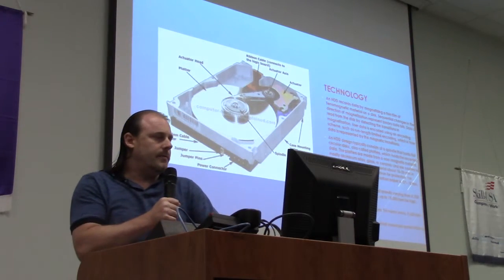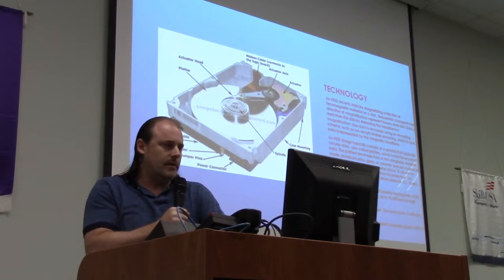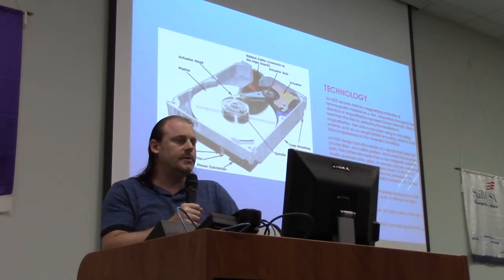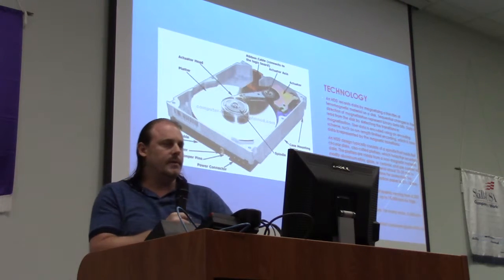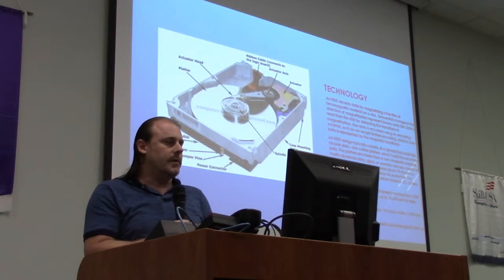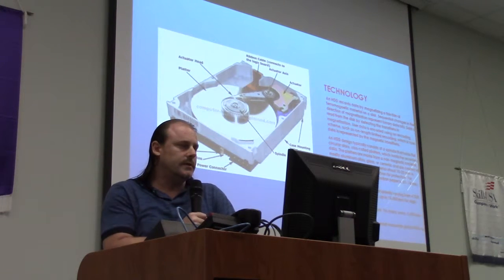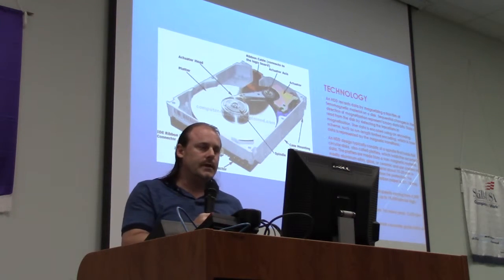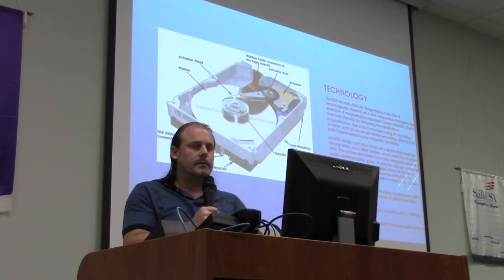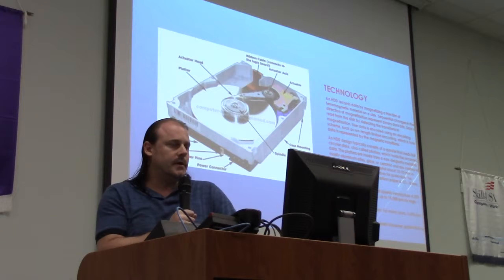Hard drive records data by magnetizing a thin film of ferromagnetic material on a disk. Sequential changes in the direction of magnetization represent binary data bits. Data is read from disk by detecting the transition in magnetization. User data is encoded using an encoding scheme, such as run length limited encoding, which is how data is represented by the magnetic transitions.